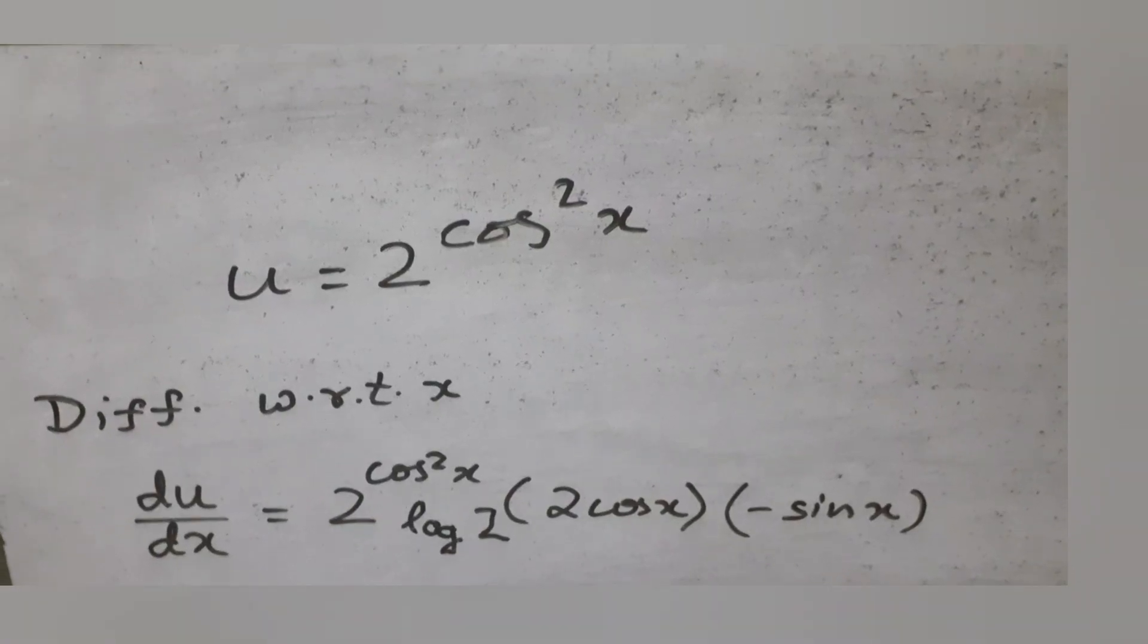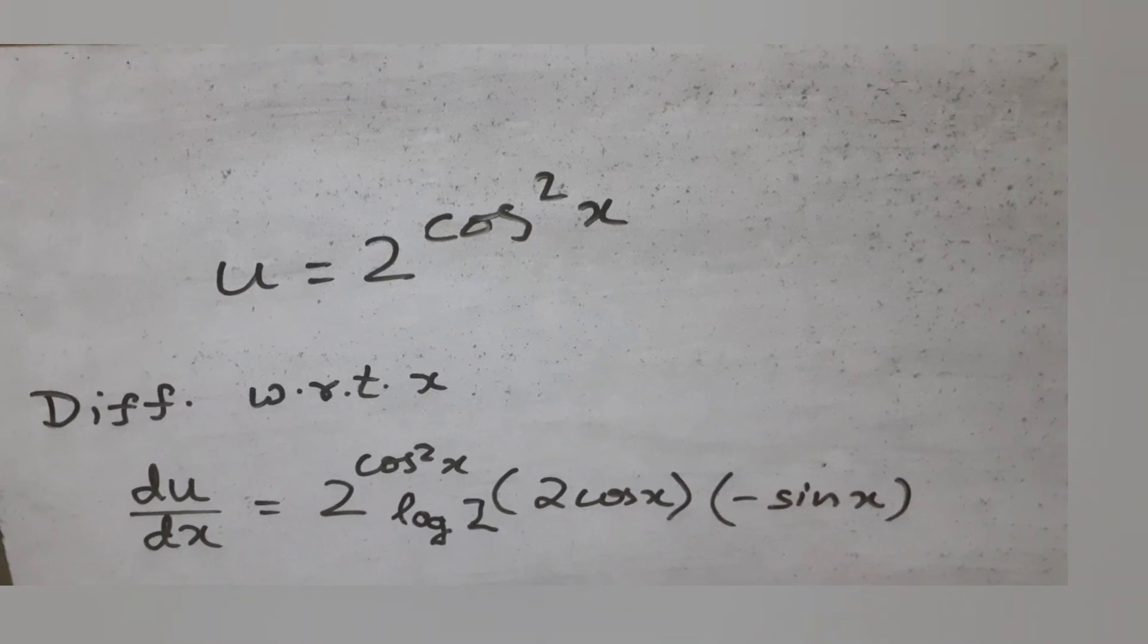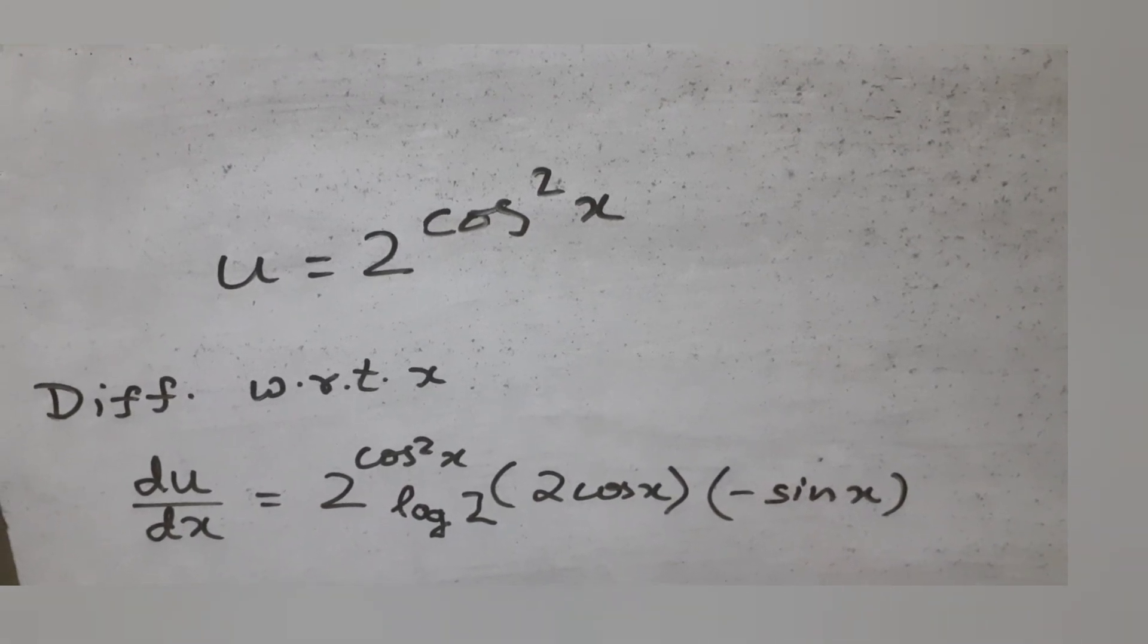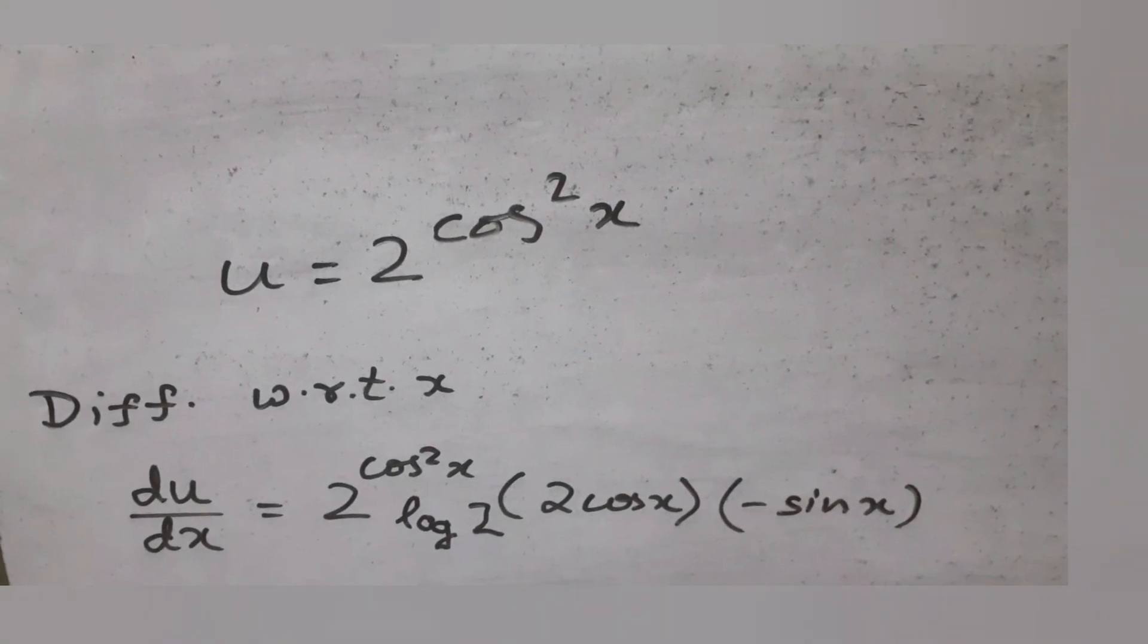Derivative of du by dx will be 2 power cos square x into log 2 into 2 cos x into minus sin x. Note that the base of the logarithm is e.